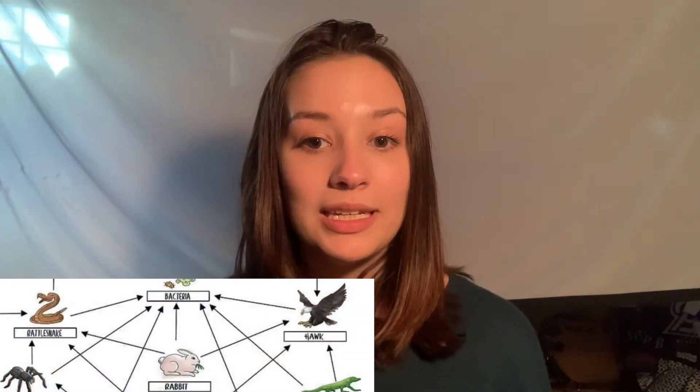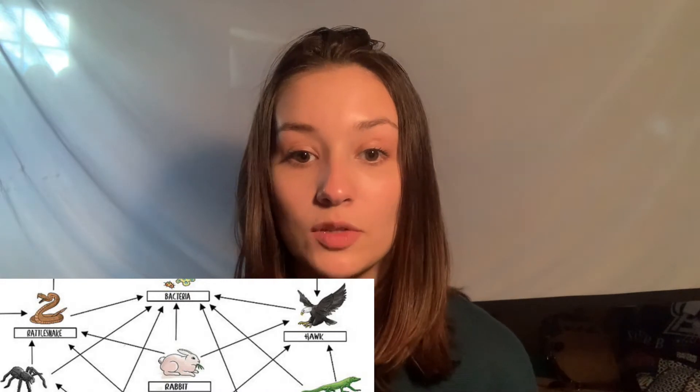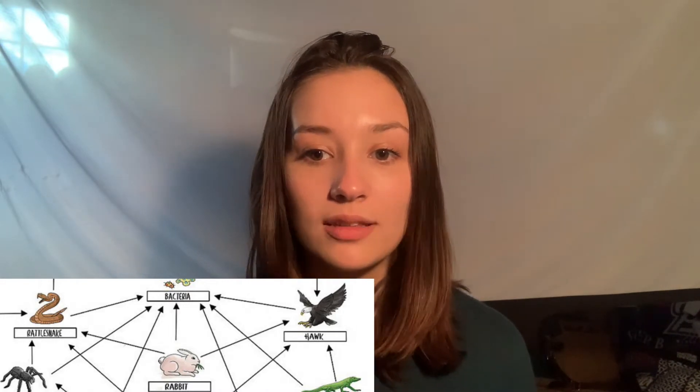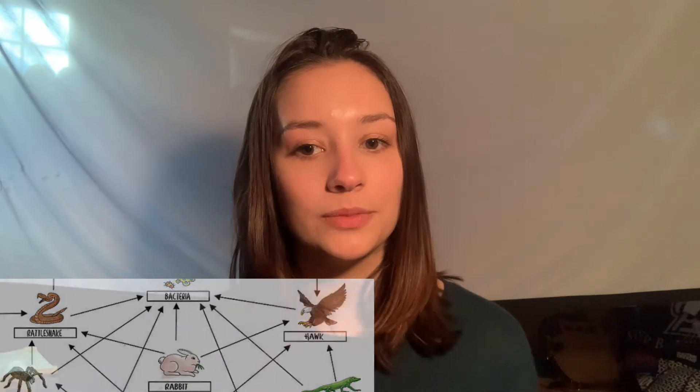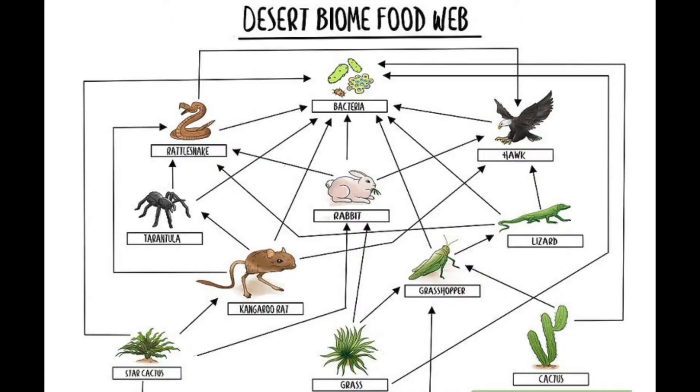Let's follow the rabbit. The rabbit is consumed by both the rattlesnake and the hawk, meaning the rattlesnake and the hawk are fulfilling the secondary consumer trophic level in this food chain. You'll also notice there's an additional line that connects the rabbit to bacteria, and in fact everything is connected to bacteria — because bacteria is the decomposer in this ecosystem.